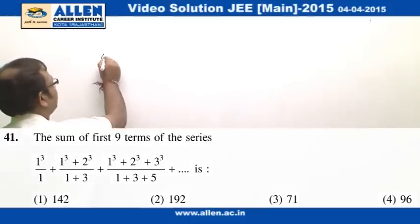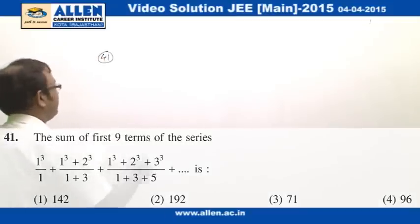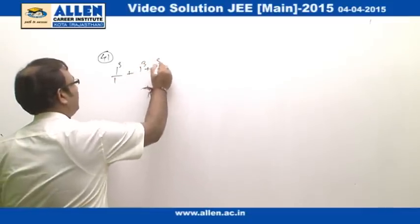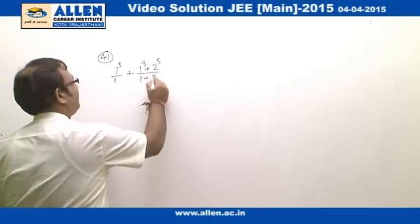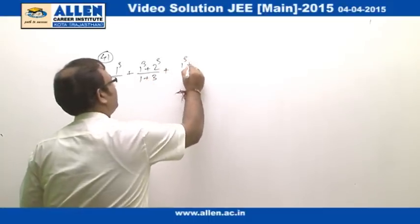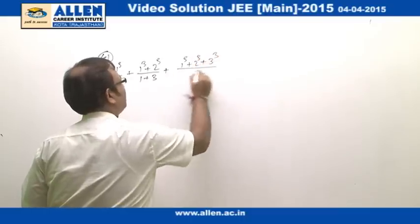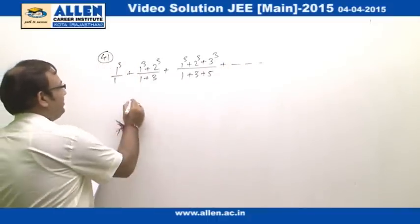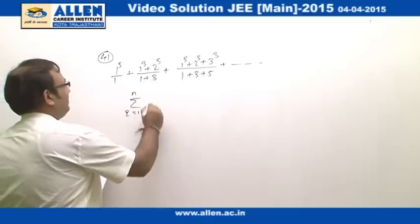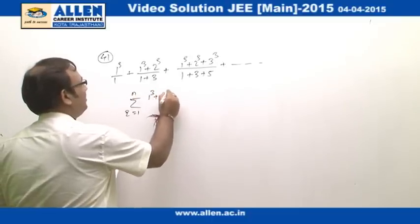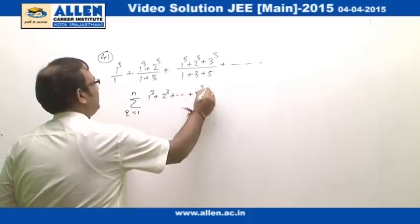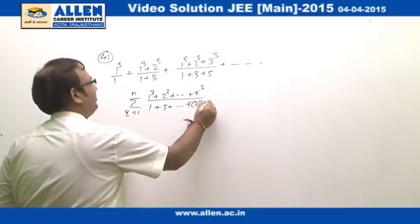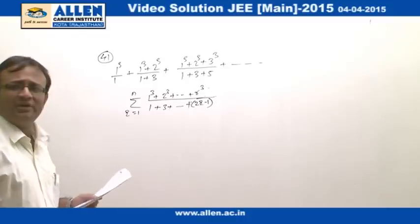Question number 41. In this question, we have to find the sum: 1³/1 + (1³+2³)/(1+3) + (1³+2³+3³)/(1+3+5), up to 9 terms. So basically it is sigma r=1 to n of (1³+2³+...+r³) divided by (1+3+...+(2r-1)). This is the sum that we intend to find.